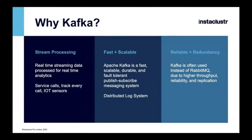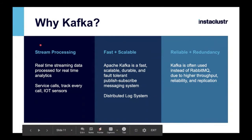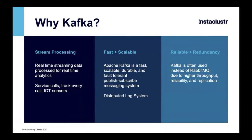Some of the salient features of Kafka: stream processing — you can visualize it as a stream processing engine capable of real-time streaming data processing for real-time analytics. As the need to process data in real-time increases, Kafka works very well — for example, tracking service calls, IoT sensors, and that sort of real-time processing. It is fast and scalable: Kafka is very fast because of its simple architecture, and because it's a distributed system you can scale it on the fly, horizontally or vertically.